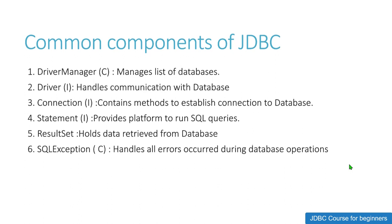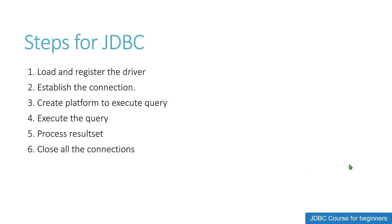These are the common components of JDBC. Now, the six steps we need to implement for JDBC are: first, load and register the driver; second, create the connection; third, create the platform to execute queries; fourth, execute the query; fifth, process the result set; and sixth, close all the connections. We close connections because the database is a costly resource and we need to avoid data leakage.